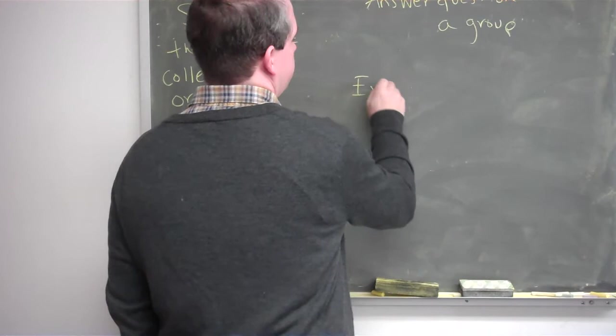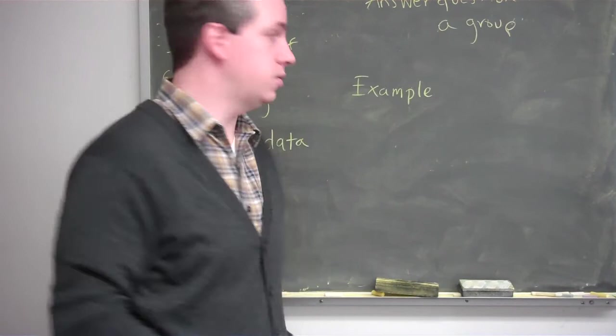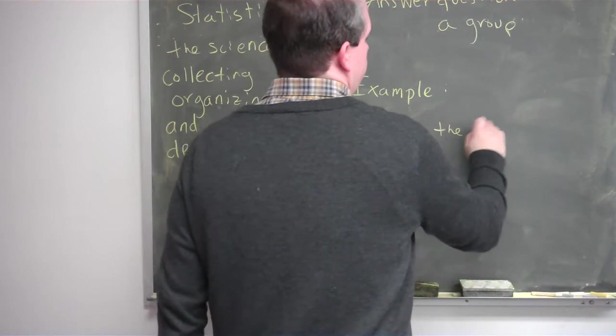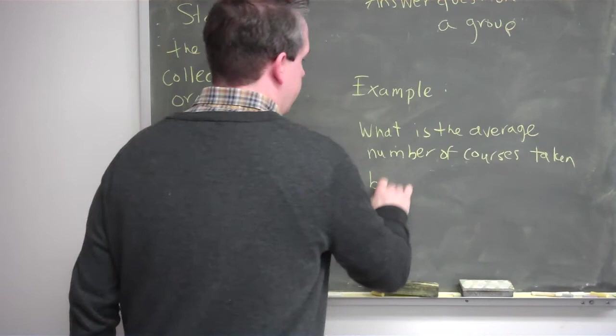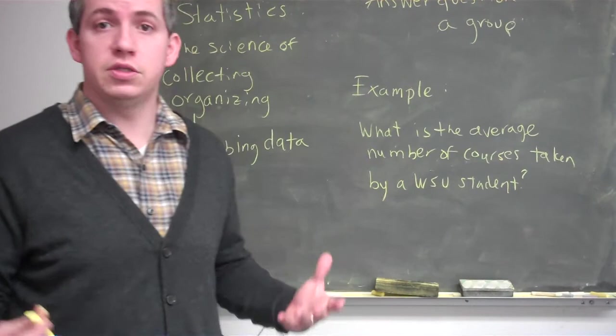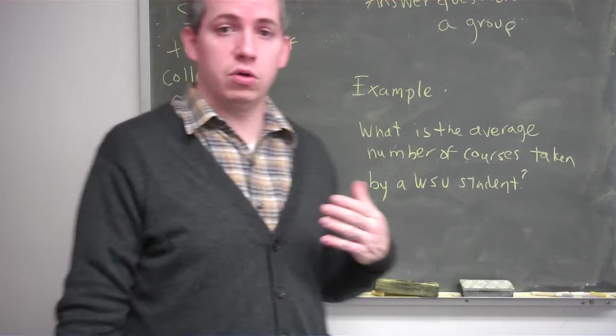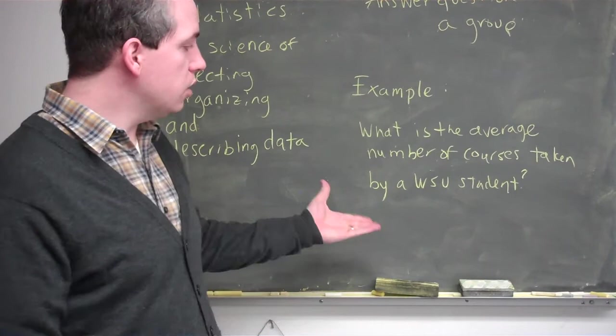Here's an example. Suppose that I want to know the average number of classes or courses taken by a Wayne State student. You can change this question to virtually any question you want to answer about a group of people, places, or things. When we're looking at this question, our goal is to go and answer it. This is about a group of people, and this group is very specific — it is Wayne State University students. So this is what I would call my population.